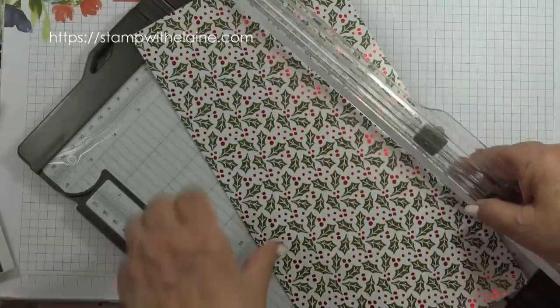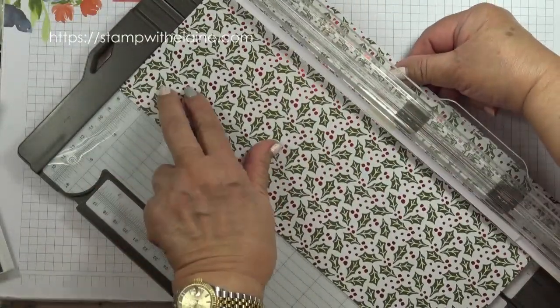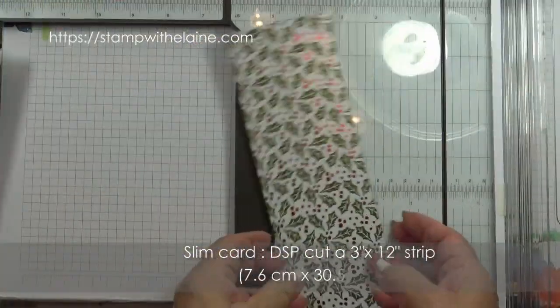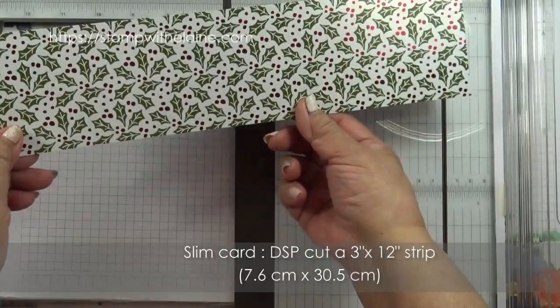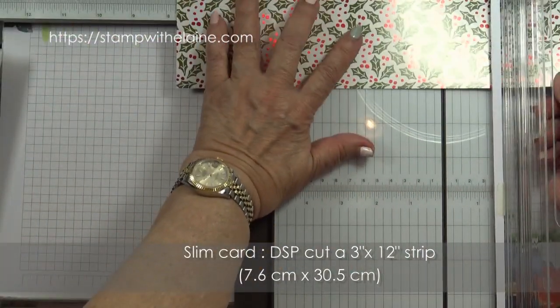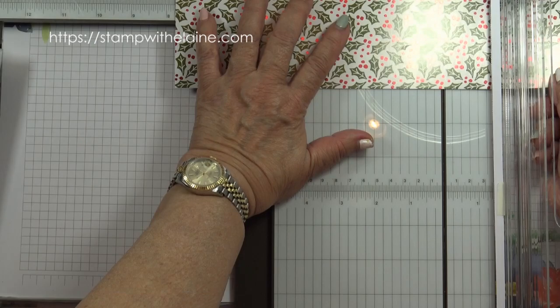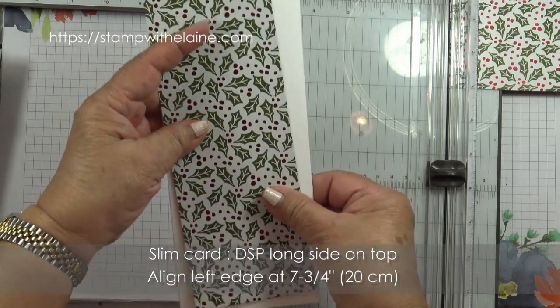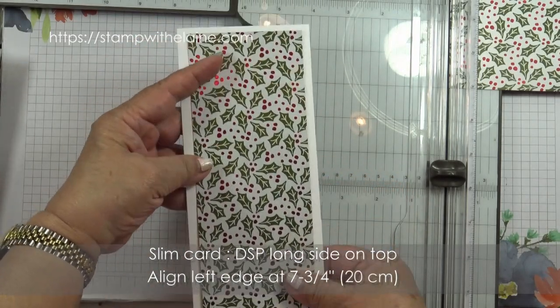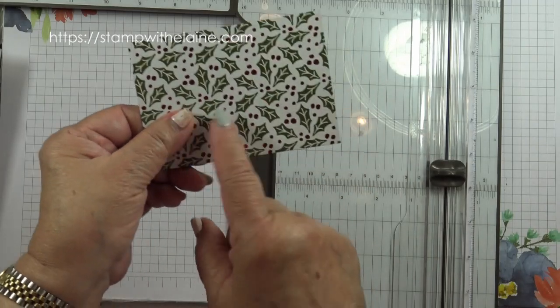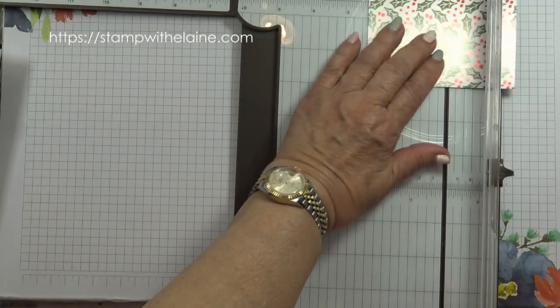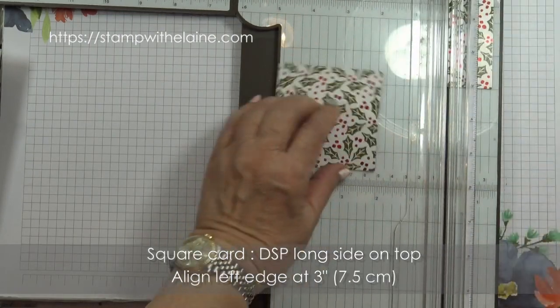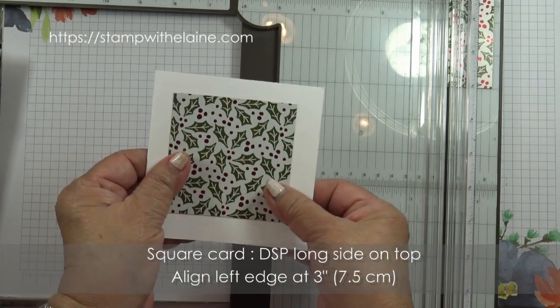I've sized it so that you can get at least four slim cards out of it and four square cards. So if you cut them into three inch by 12 inch strips, turn it on its side and align it at seven and three quarters, and that will give you the mat layer for your long slim card. And then cut the next slot at three inches as well.